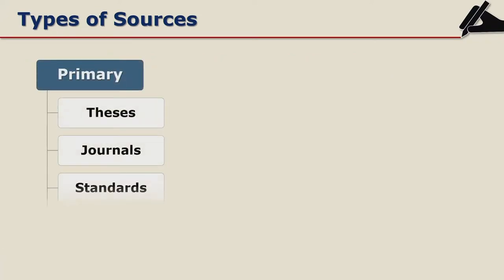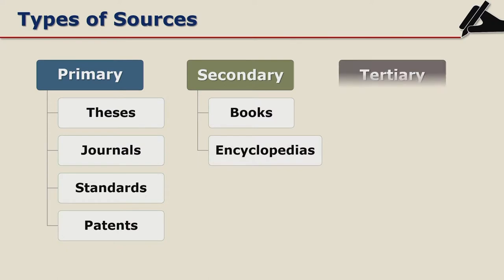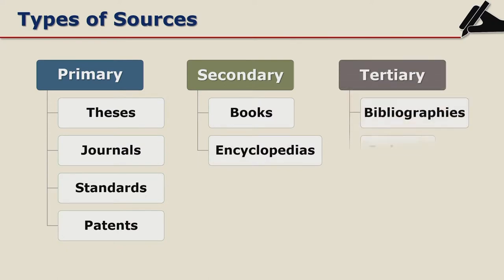There are three types of resources: primary, secondary and tertiary. Under primary, theses, journals, standards and patents come.